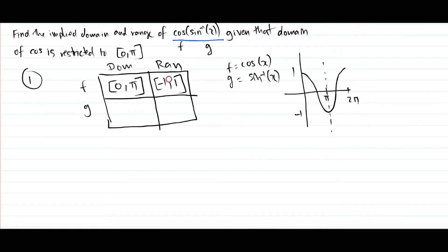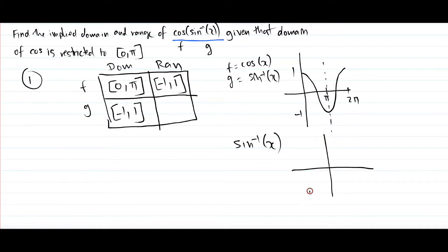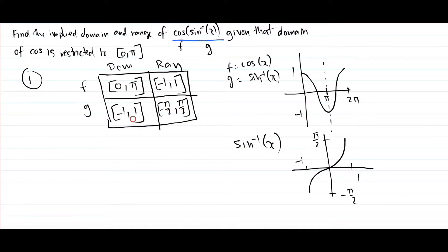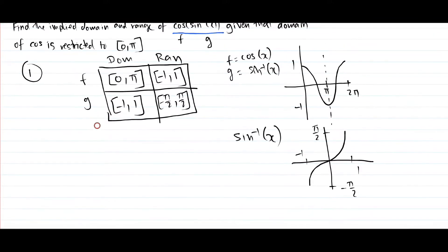So now we've got the domain and range for our cos graph, which is the f function. Now we need the g function. We know that the implied domain for a sin⁻¹ graph is negative 1 to 1. Our sin⁻¹ graph always looks like this — the domain starts from negative 1 and ends at 1, and the range starts at negative π/2 and ends at π/2. So the range of g is negative π/2 to π/2.